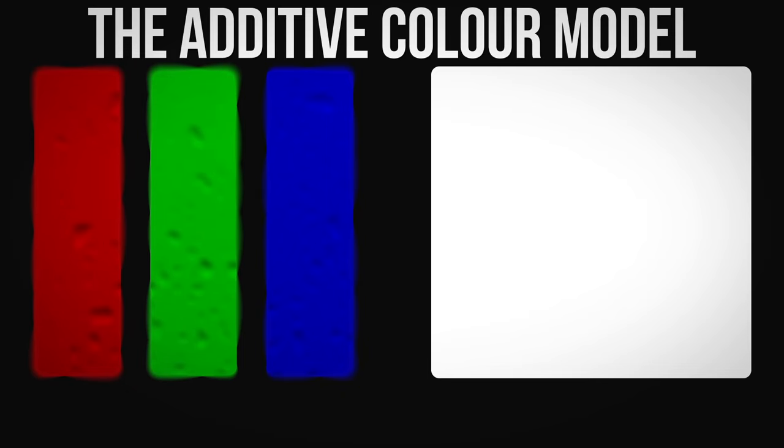For instance, if the red and green subpixels are turned on all the way, the resulting pixel would be yellow. Or if the red pixel was dim and the blue pixel was on all the way, the resulting colour would be purple. All three subpixels added together create white, which is why RGB is known as the additive colour model.